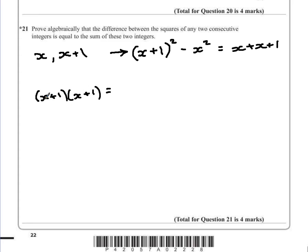So x times x is x². x times 1 is x. 1 times x is x. 1 times 1 is 1. If we simplify that, we have x² + 2x + 1.